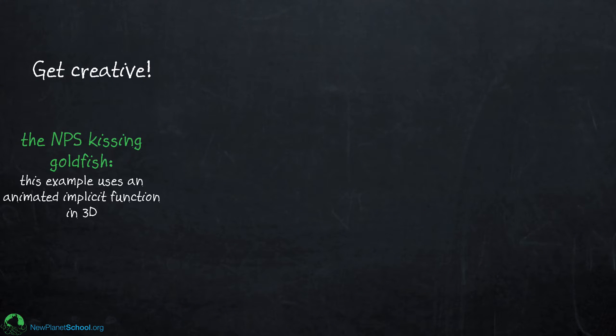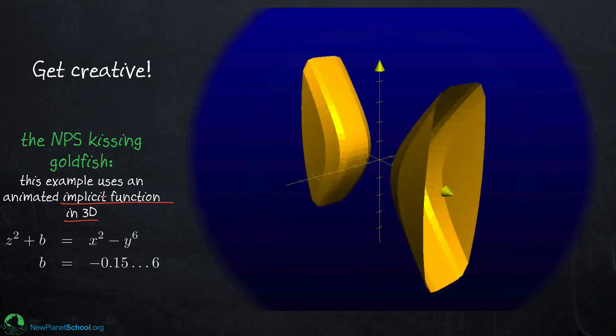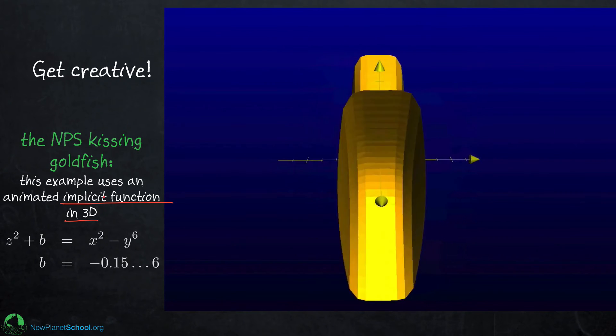So be creative. Here's an example that I made up myself. I call it the kissing goldfish. And it's kind of neat because it uses the animation feature within what's called an implicit function in 3D. And this happens to make something that looks like kissing goldfish.